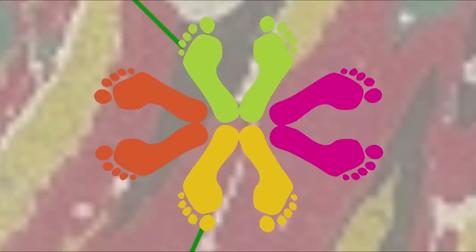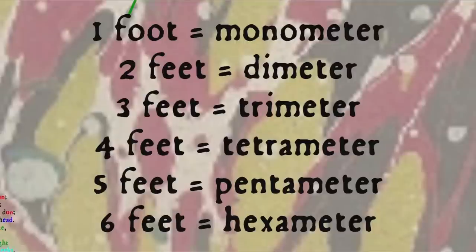Now these various feet can be combined in different numbers to make a line of poetry, so monometer has one foot, dimeter has two feet, trimeter has three feet, tetrameter has four feet, pentameter has five feet, hexameter has six feet, and so on.